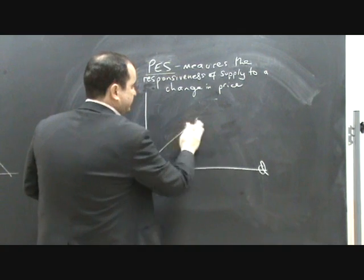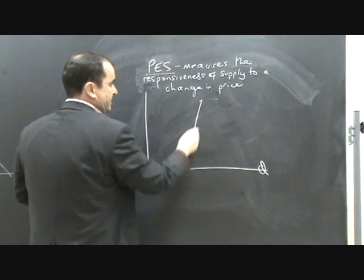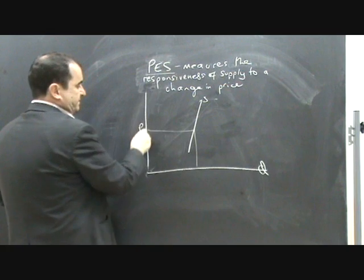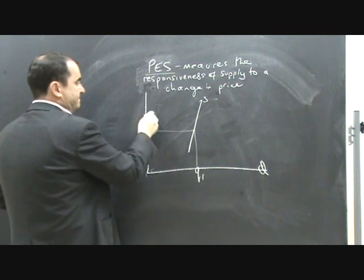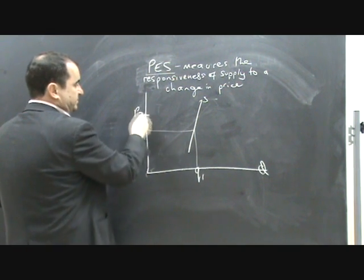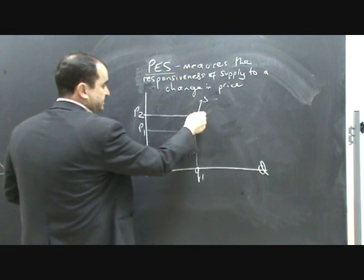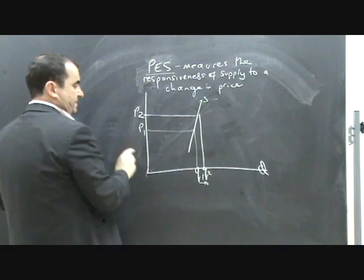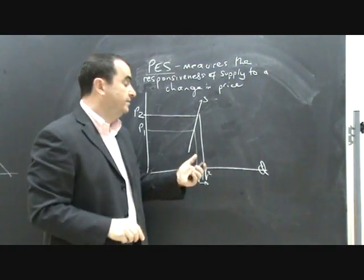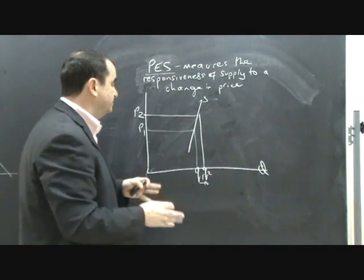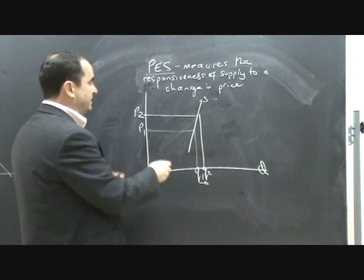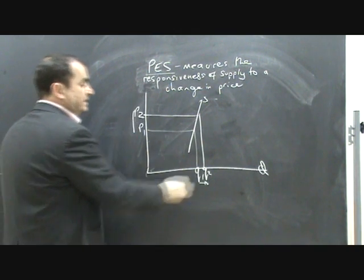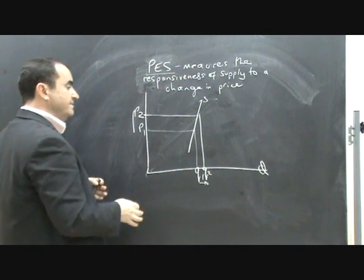If the supply curve is very, very steep, you can see that as price goes up from P1 to P2, quantity supplied only rises by a smaller proportion. This would probably indicate inelastic supply. You see, the suppliers are not able to react greatly when the price went up. They can't increase their supply by very much.